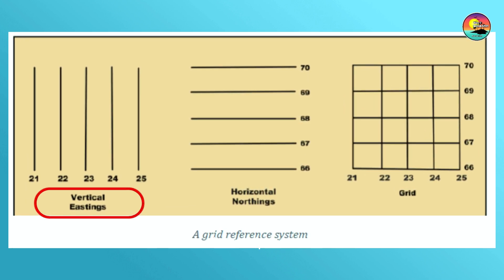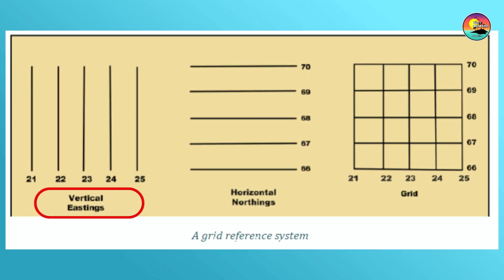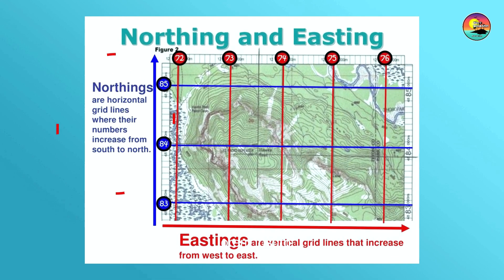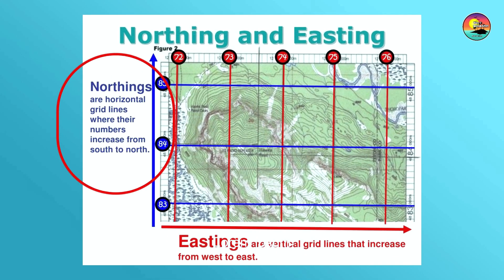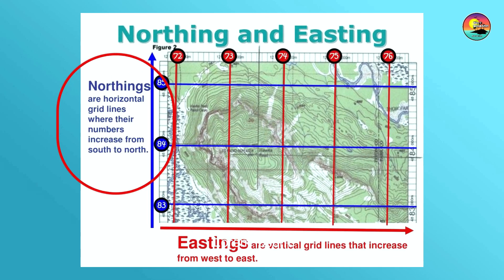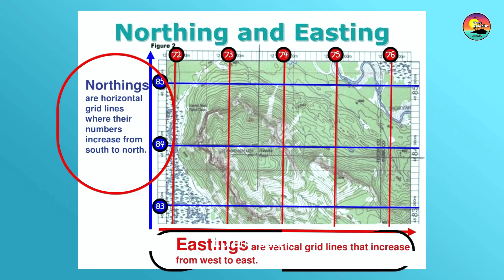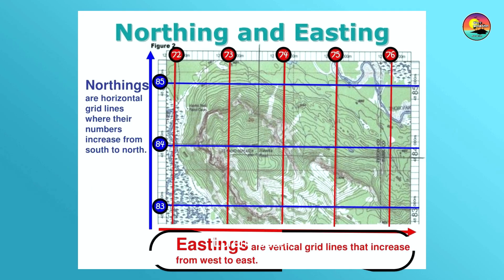Northings and eastings — what are northings and eastings? Northings are horizontal grid lines whose numbers increase from south to north. Eastings are vertical grid lines that increase from west to east.